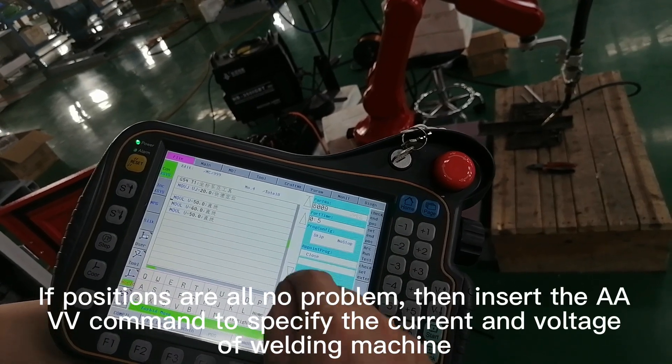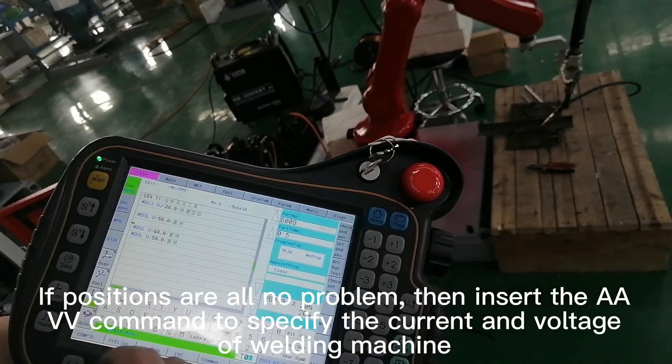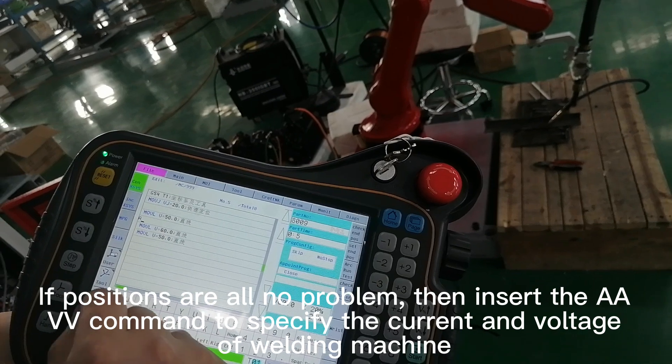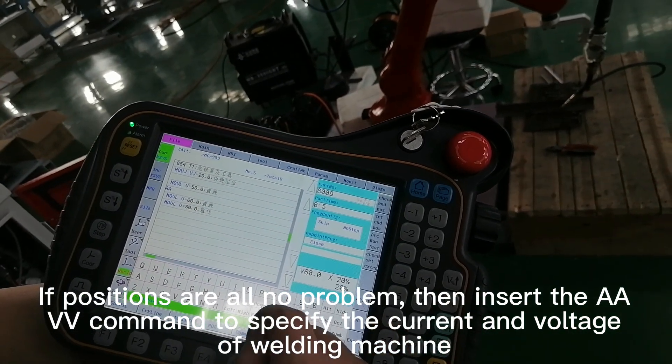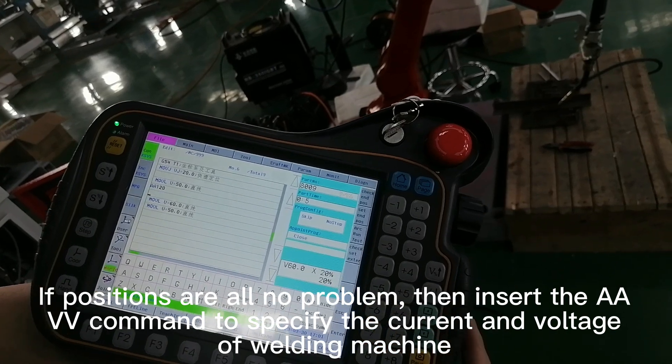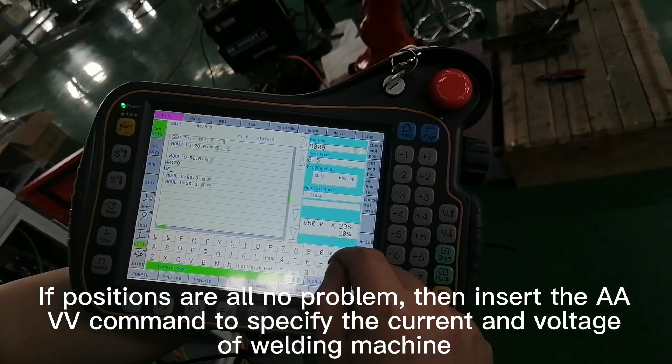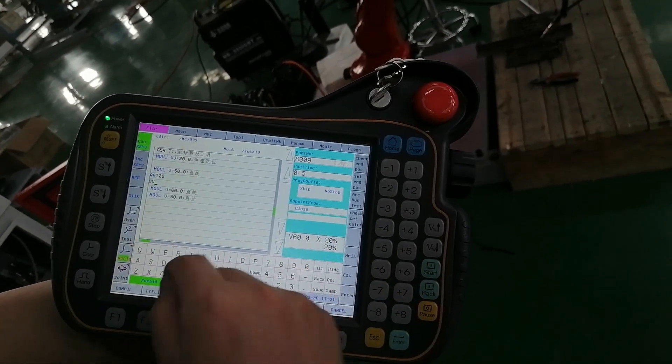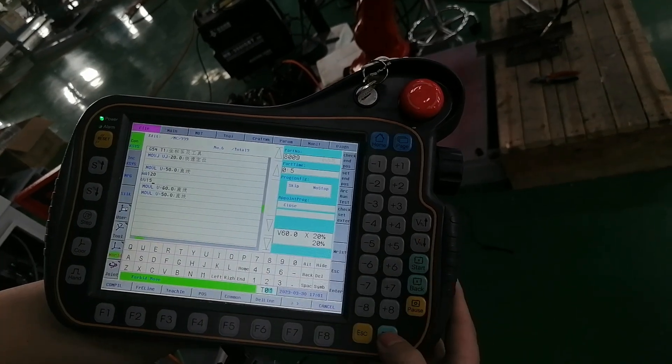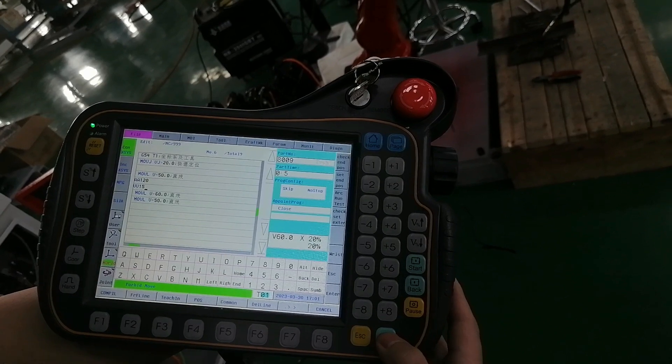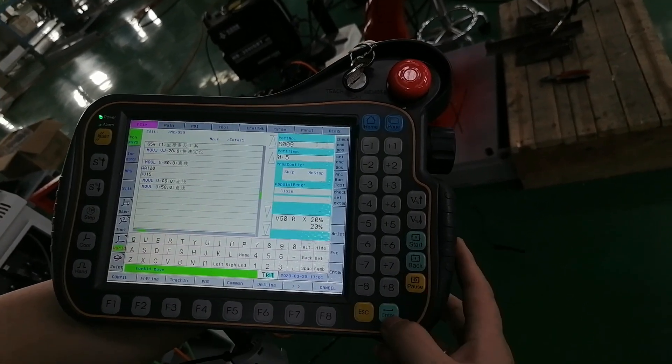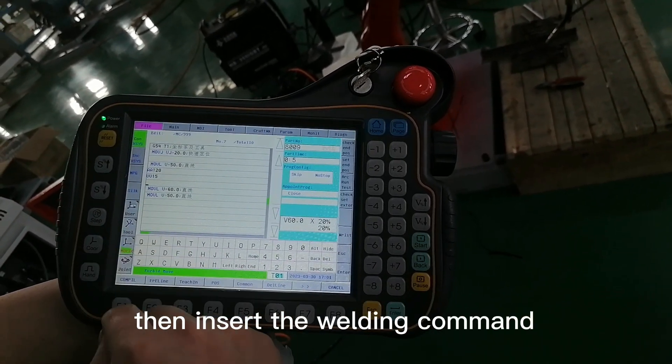If positions are on no problem, then insert the AAVV command to specify the current and voltage of welding machine. Then insert the welding command.